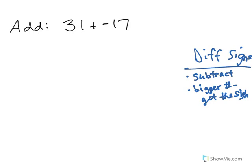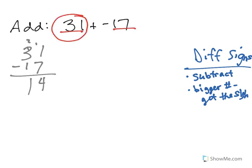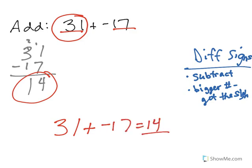So subtract. We're going to, in this case, because we have 31 plus negative 17. So 31 minus 17 is 14. Now look, 31, 17. 31 is bigger than 17, and 31 is positive, so my answer here is a positive 14. So 31 plus negative 17 is a positive 14.